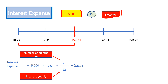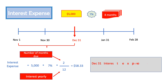Now I prepare my adjusting entry. I debit interest expense for $58.33 and credit interest payable since the interest is not due yet. So: debit interest expense $58.33, credit interest payable $58.33.